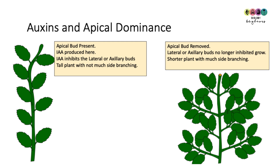Auxins, in particular IAA, are responsible for apical dominance. When the apical bud is present, IAA produced there inhibits the lateral or axillary buds from growing, giving a tall plant with not much side branching. However, if you cut off the apical bud, the lateral buds are no longer inhibited and they grow, giving a shorter plant with much more side branching.